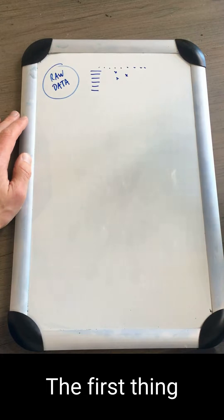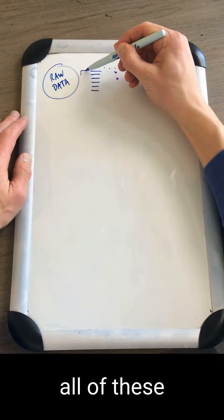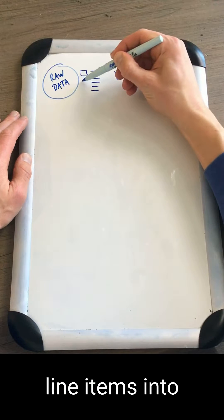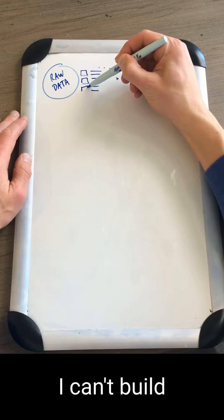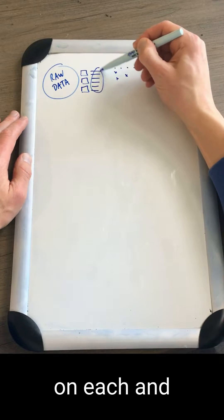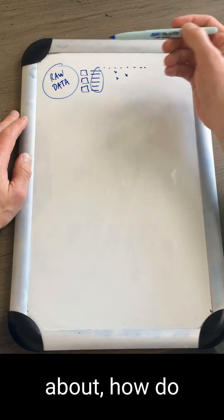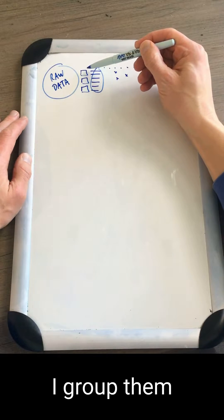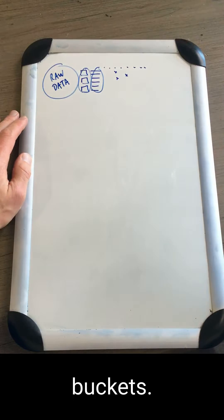The first thing I'm thinking about is grouping all of these line items into specific buckets, because I can't build a model based on each and every account — it's just going to be too complicated. So I'm thinking about how to group them together into buckets.